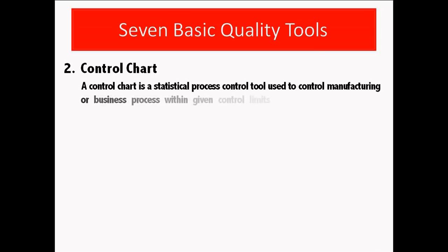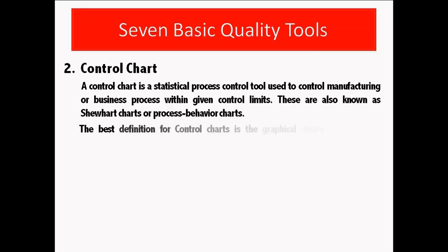A control chart is a statistical process control tool used to control manufacturing or business process within given control limits. These are also known as Shewhart charts or process behavior charts. The best definition for control charts is the graphical device for statistical process monitoring, simply called SPM.